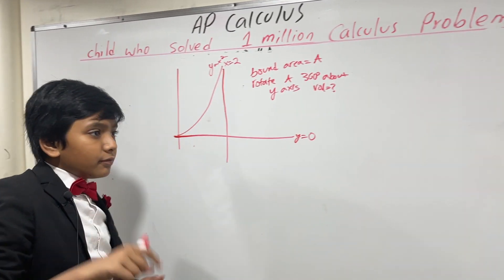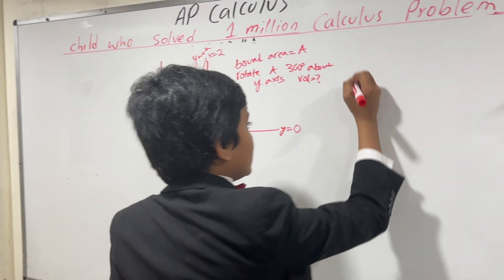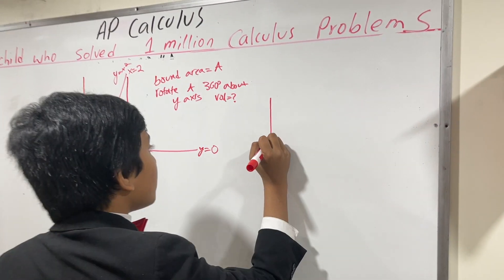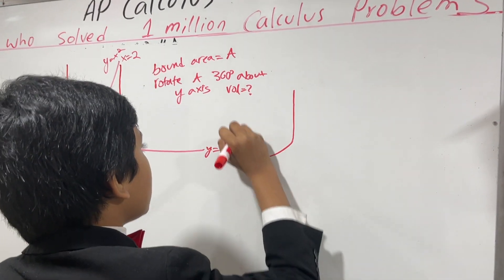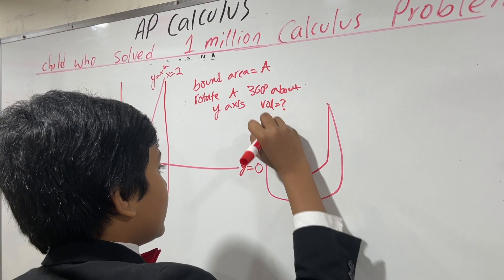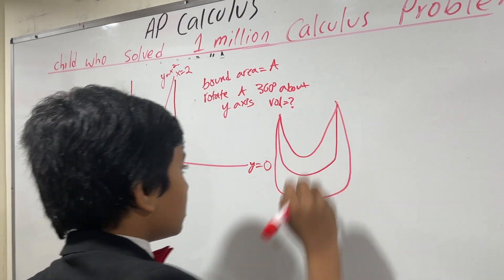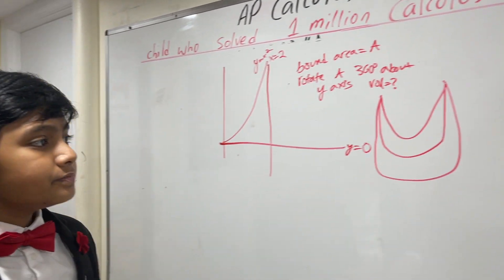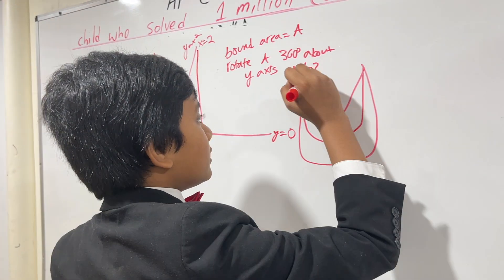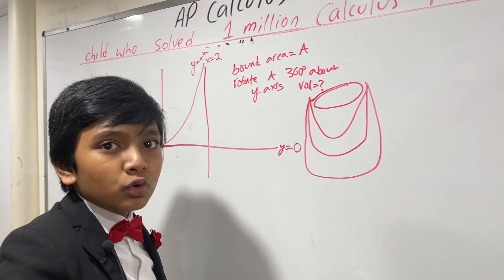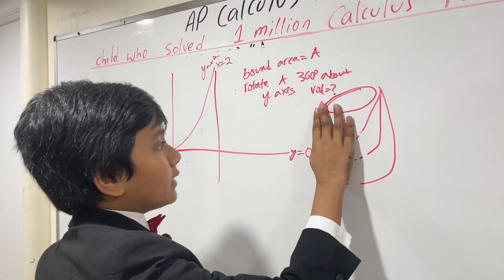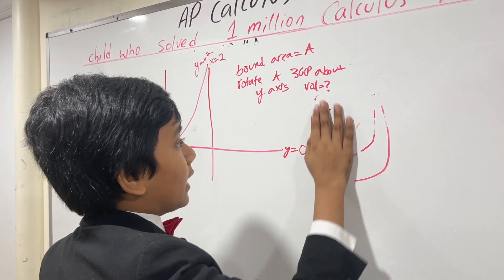Now, if we rotate it about the Y-axis, we see that it's probably going to give us a weird valley-looking thing like this. But you see, this valley has a big hole in it, so we need to calculate the area of that hole.